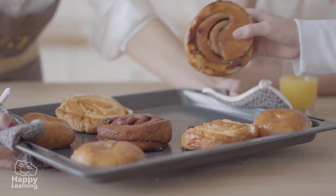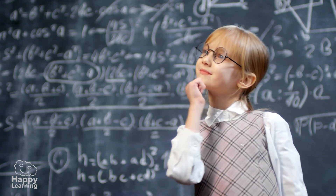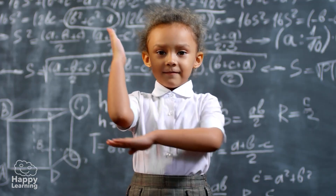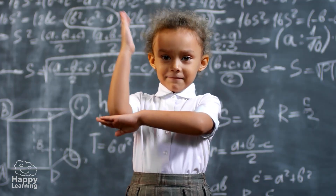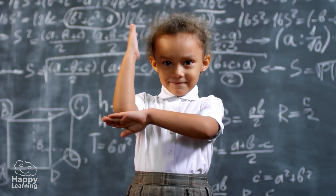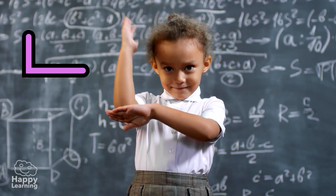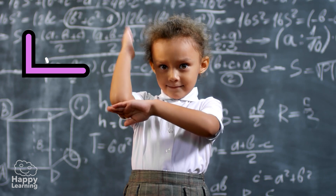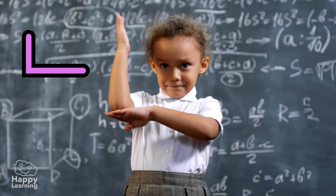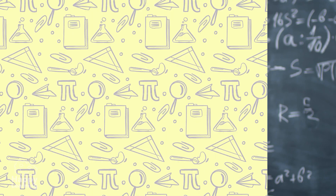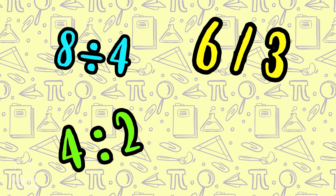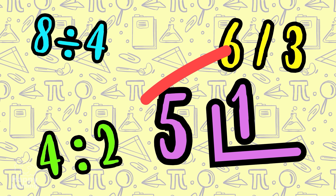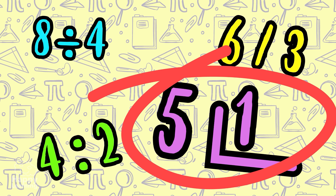We already know that dividing is distributing. But how do you do the mathematical operation? It's very easy — using this sign, which is like an angle. There are other signs that also mean dividing, but we are going to use the angle.